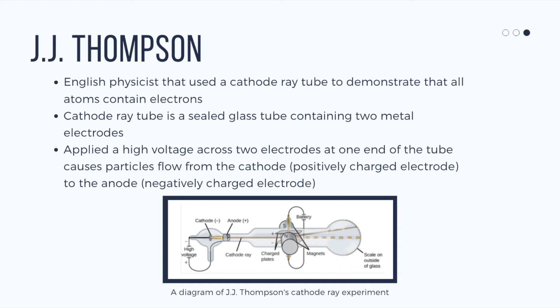A cathode ray is a sealed glass tube containing two metal electrodes. He applied a high voltage across these two electrodes, and at one end of the tube caused the particles to flow from the cathode to the anode.